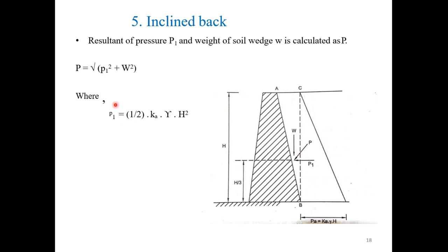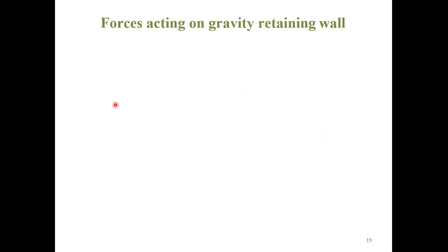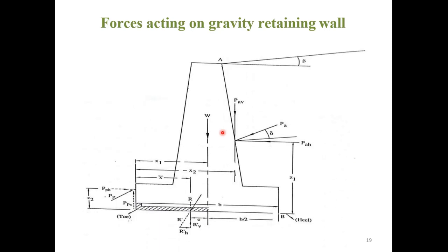You can see the forces acting on a gravity wall in this figure. W is the weight of the gravity retaining wall, PAH is the active earth pressure acting at distance Z1, and PPH is the passive earth pressure on the other side.